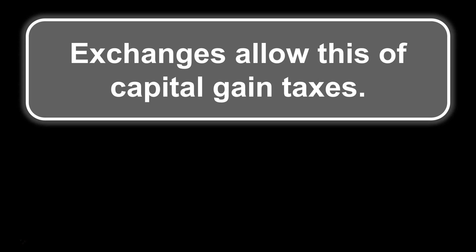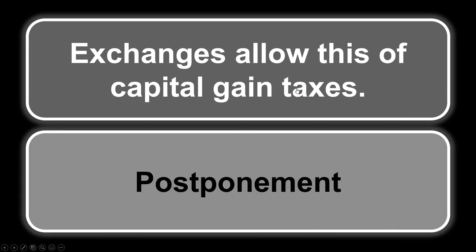Exchanges allow deferral of capital gain taxes. The reason investors do this is because they don't want to pay taxes on the capital gains they'd receive — they reinvest in another property and are basically postponing the payment of capital gains taxes. They are deferring it. Eventually it will be paid unless they convert it to a primary residence and live there for five years, but they are deferring the capital gains taxes.